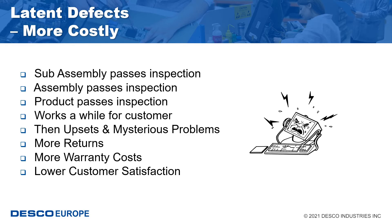Catastrophic failures: When an electronic device is exposed to an ESD event, it may no longer function. The ESD event may have caused a metal melt, a junction breakdown, or oxide failure. The device's circuitry is permanently damaged, resulting in a catastrophic failure.